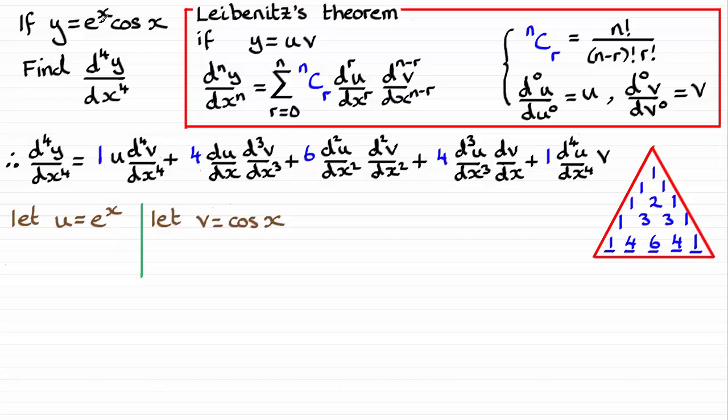u is e to the x, and v is cosine of x. So when it comes to working out du dx, d2u by dx squared, and so on, we'll need to start differentiating this. So therefore, if I work out du by dx, well, that's going to be e to the power x. And if I was to differentiate this again, d2u by dx squared, it too would be e to the x, and so on. So in general, dnu by dx n is going to be e to the x.